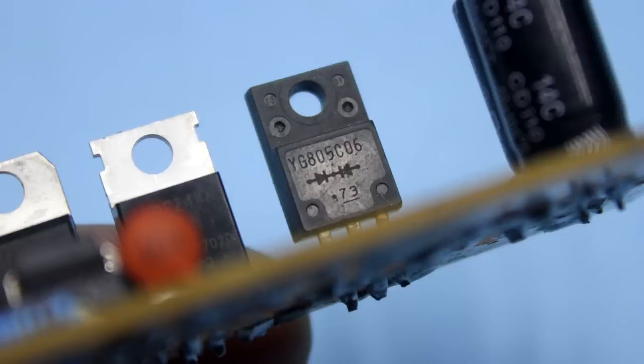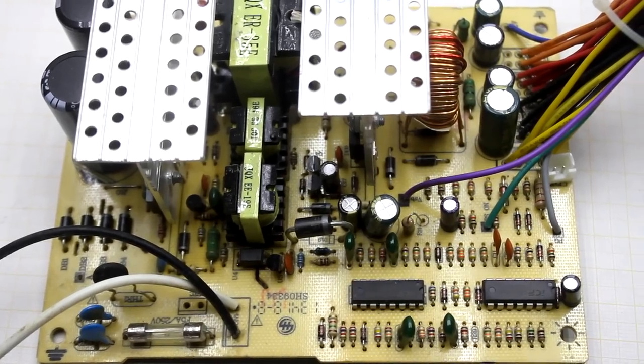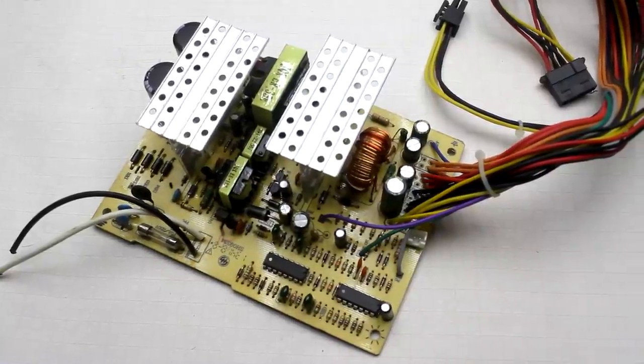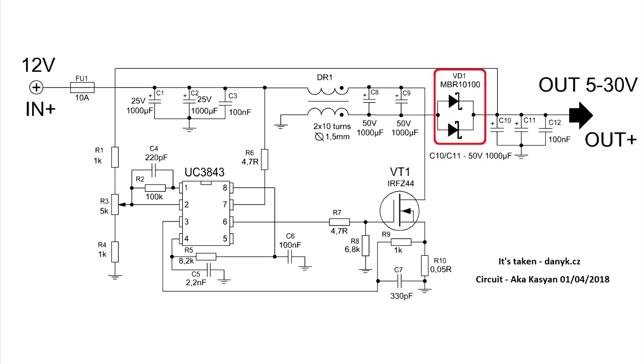Such diodes can be also found in computer power supplies where they are used as an output rectifier. That package includes two diodes, which in our circuit are connected in parallel to increase the total current and further reduce the voltage drop on the transition.